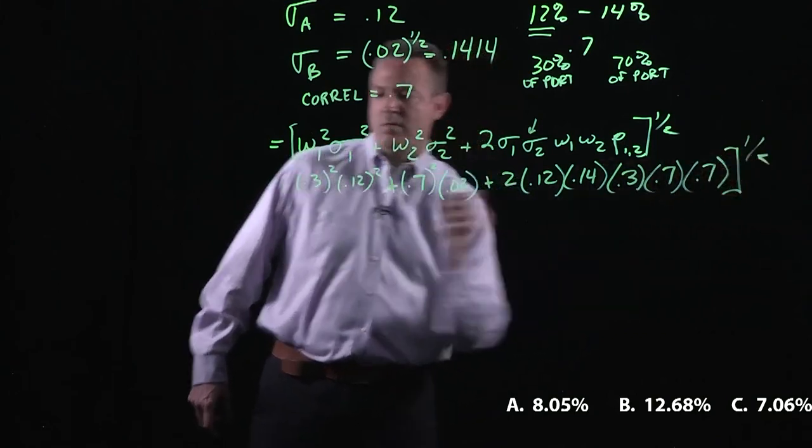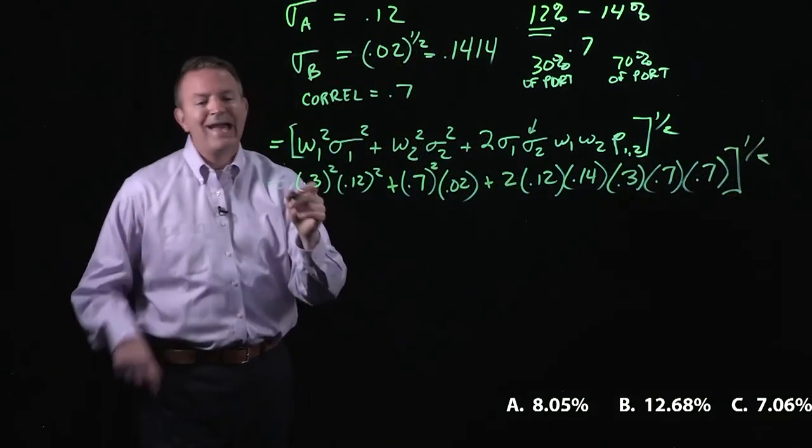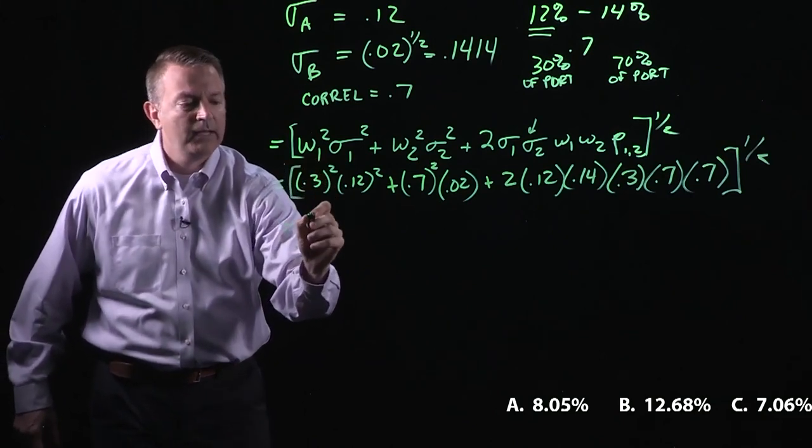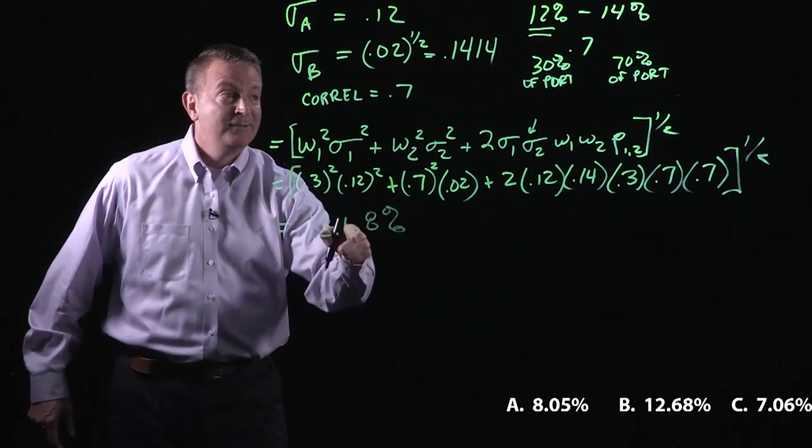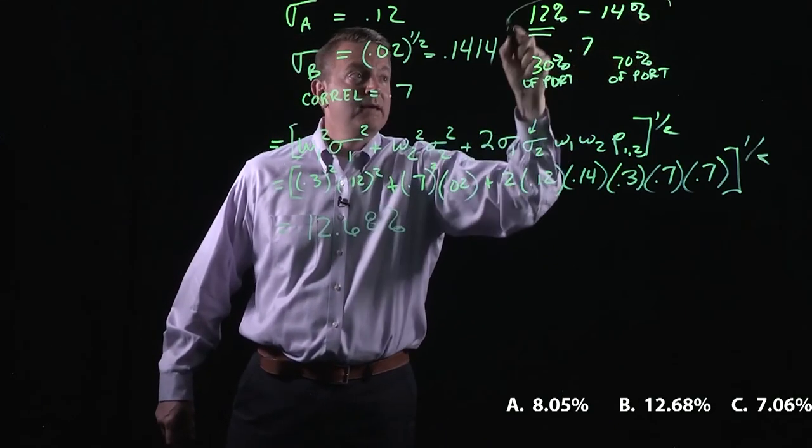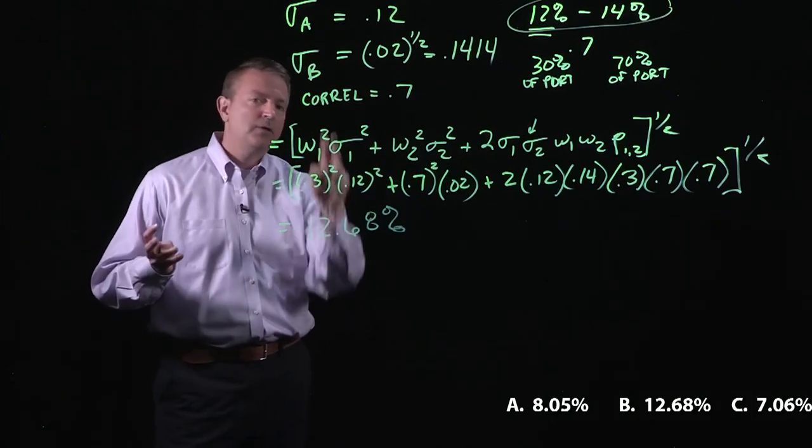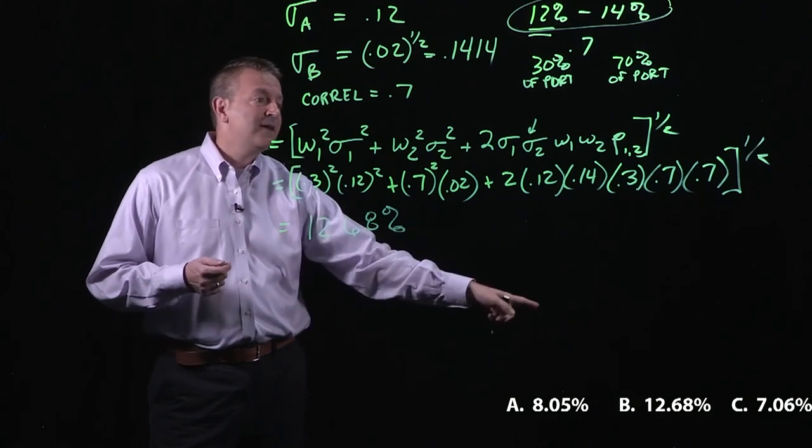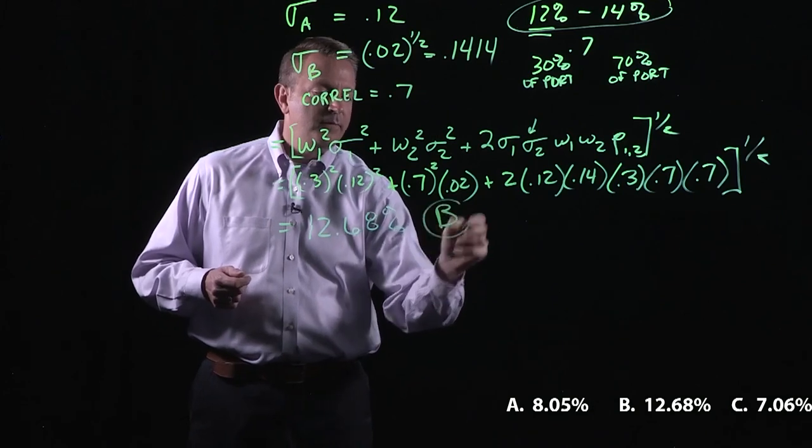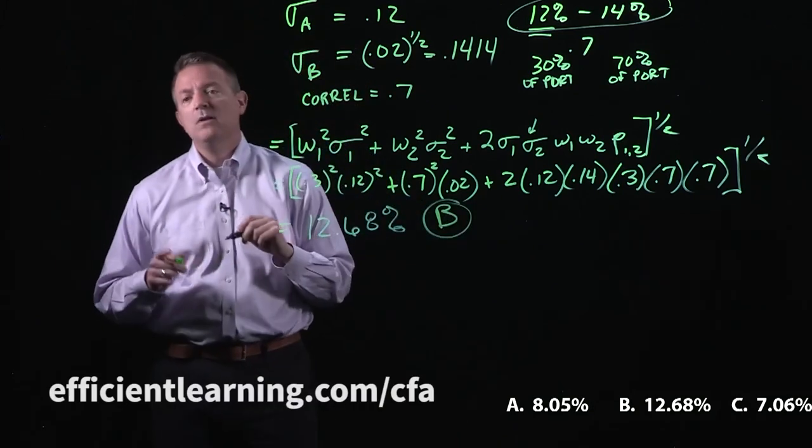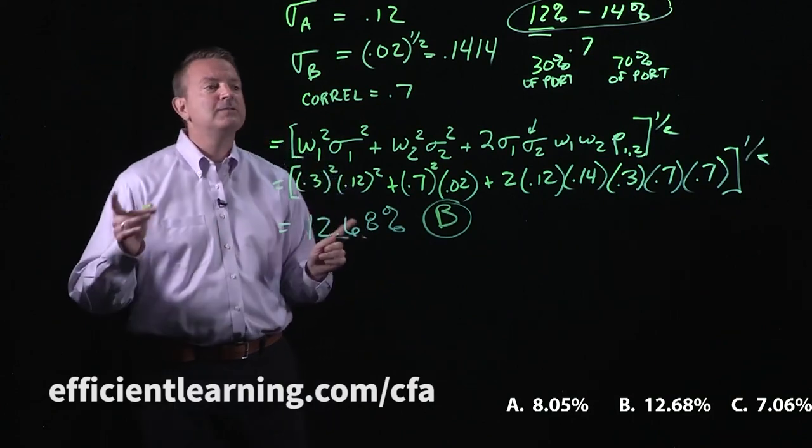We're going to take our square root. So hopefully you're really quick with your calculators. You know exactly what this number turns out to be. And we get down to 12.68%. Did you see how this seems to be a fairly good guess? You couldn't bring down the overall volatility of that portfolio with just two assets to anywhere near that 7.06 or the 8.05. So on this one, our answer is B. So come on over and join us at EfficientLearning.com/CFA and we'll take this a little bit further.